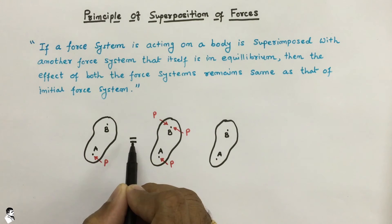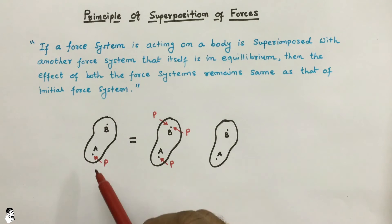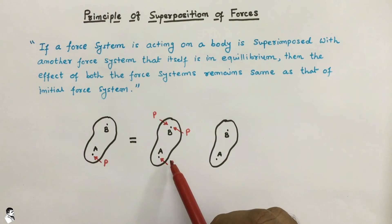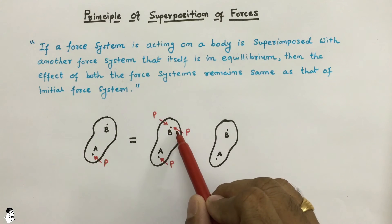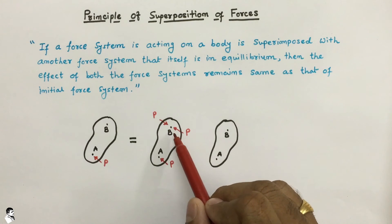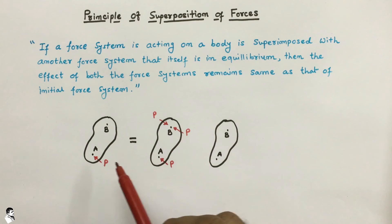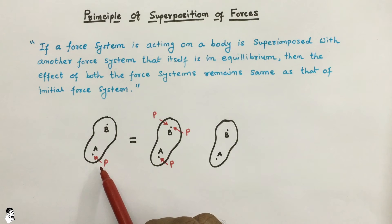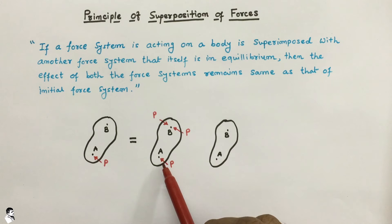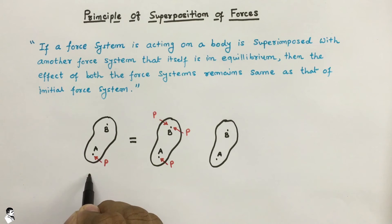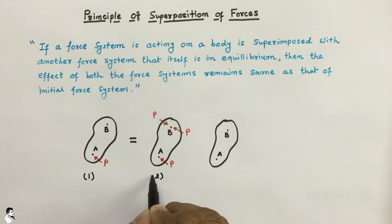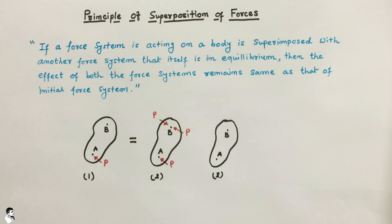We can equalize the first system with the second system because the force acting at point A still has the same magnitude P. At point B there are two forces, but they are equal and opposite, so there is no additional effect on the body. Therefore, whatever effect was generated in the first case will be similar in the second case.